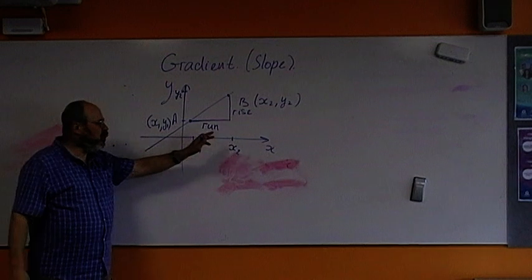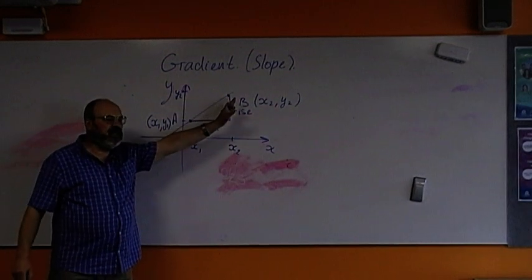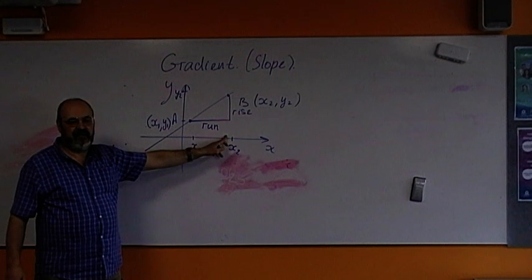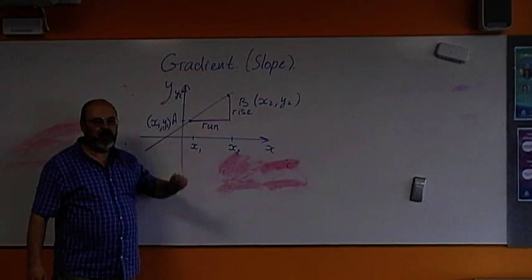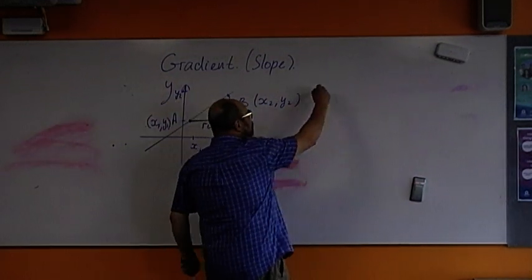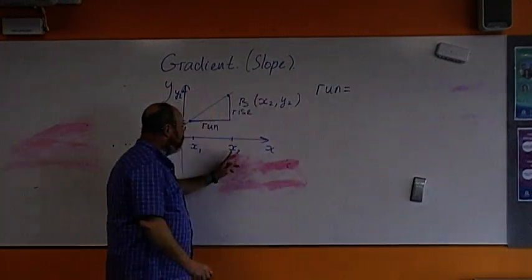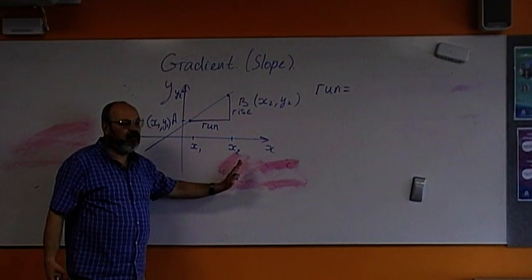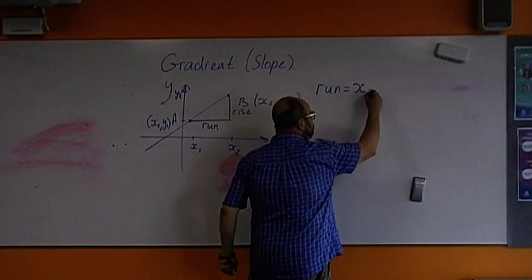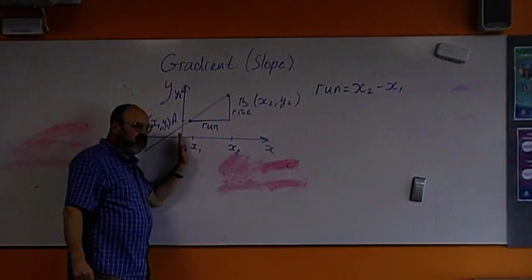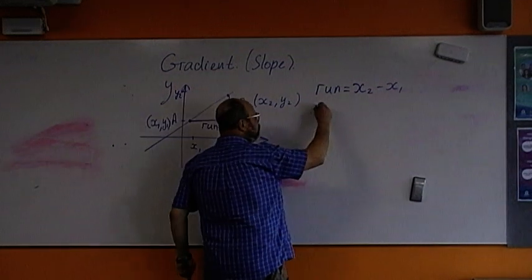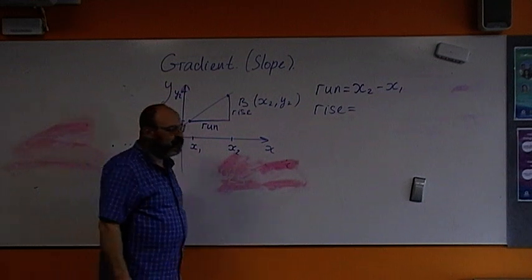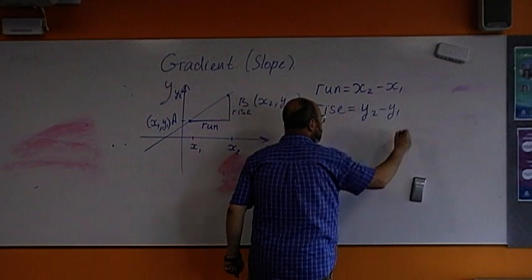So, how much x changes when we're going from point A to point B? Both change, x changes and y changes. And this is called rise. So, what will run be equal to? We're running from where to where? X1 to x2. From x1 to x2. So, how far we run? X2 minus x1. That will be the distance how far we run. What will be the rise? Y2 minus y1.